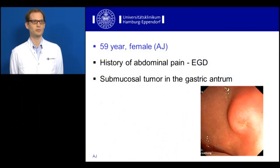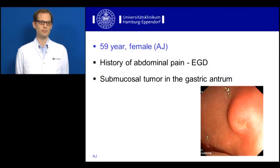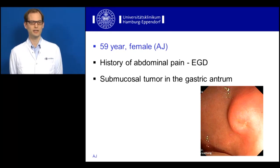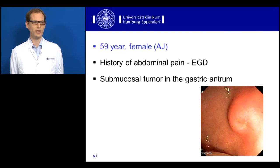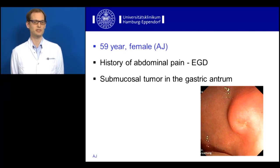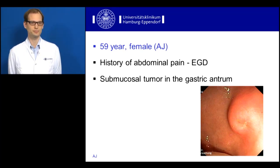The first case we're going to present is a 59-year-old female patient with a history of abdominal pain. EGD showed the incidental finding of a submucosal lesion in the distal stomach. Rob Haas will now present the EUS of that case.